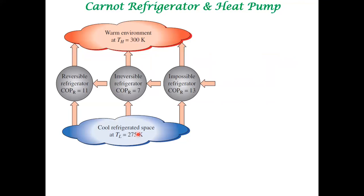The objective of a refrigerator is to remove heat from a low temperature reservoir and give it to a high temperature reservoir. Whereas the objective of a heat pump is to supply heat to some place — for example, a room in winter that you want to keep warm. So the heat pump pumps heat to a place, whereas a refrigerator takes heat away from a particular place. The objectives are different, but the working principles are pretty much the same.